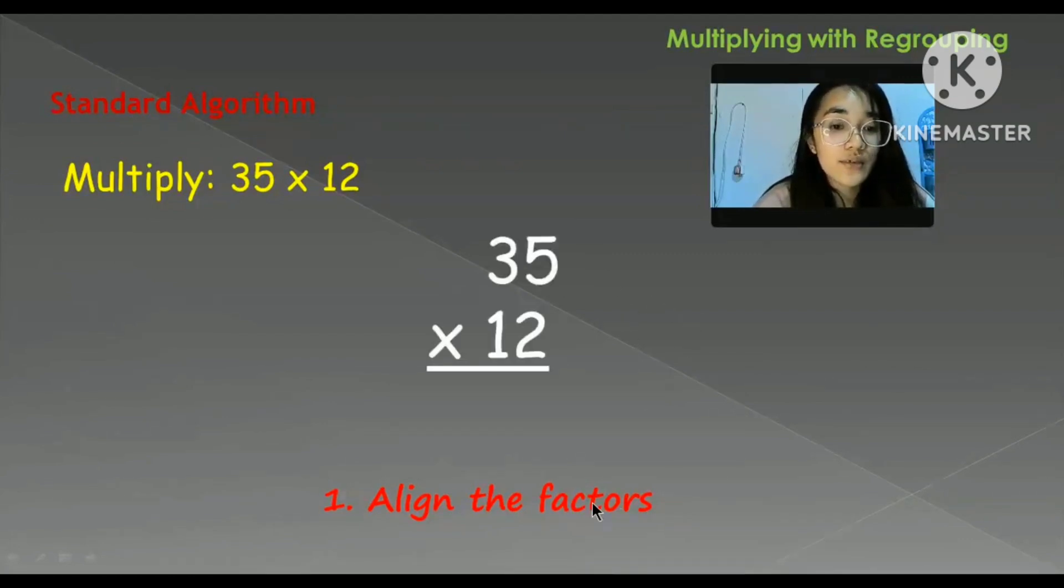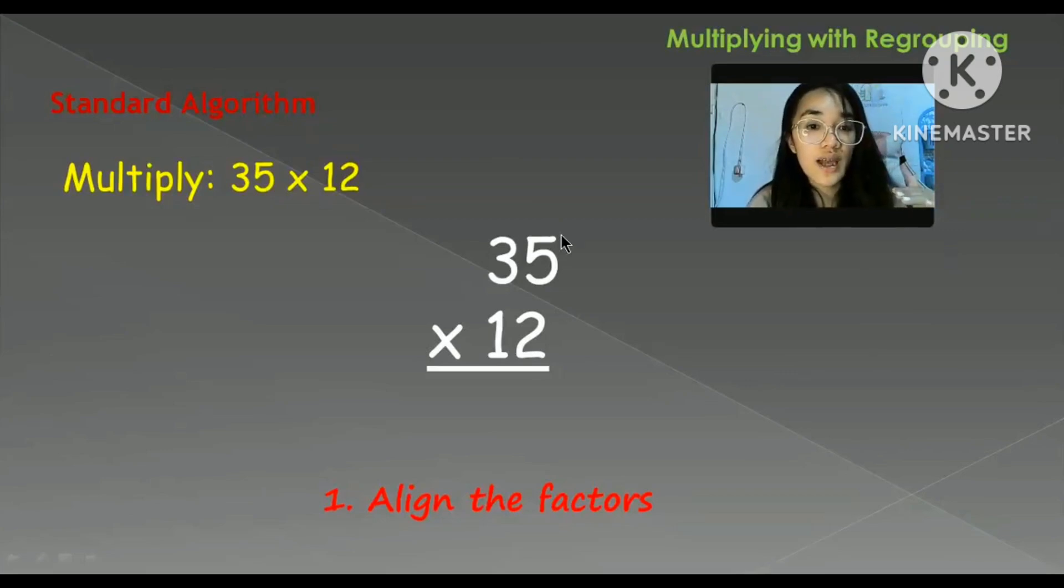So first we have to align the factors. Just a simple recall: factors are the numbers to be multiplied. Under the factor, we have the multiplicand and the multiplier. So multiplicand is the number at the top, which is 35, and multiplier is 12.